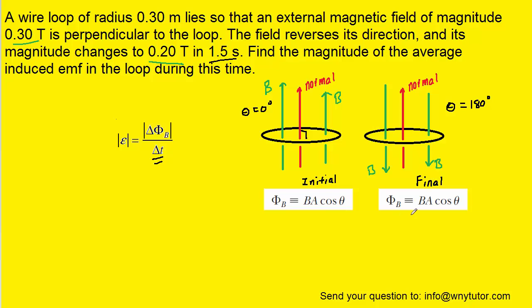So we can easily calculate the initial and final magnetic fluxes here. Notice for the area, we have used pi r squared since the loop is presumed to be circular.